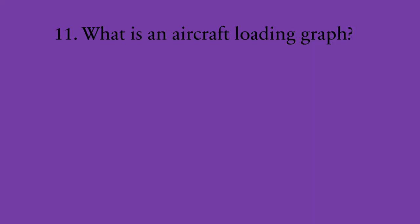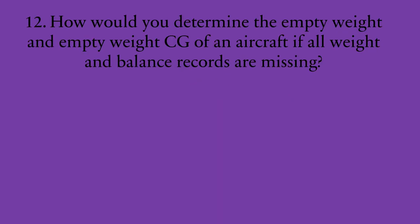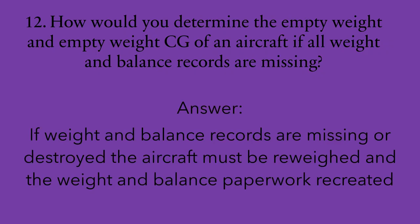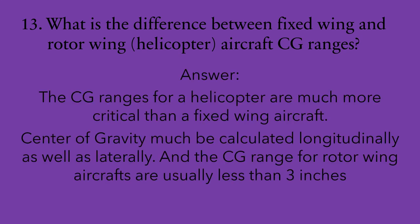Number eleven: what is an aircraft loading graph? A method of determining load distribution so that the aircraft remains within its operating CG range. Number twelve: how would you determine the empty weight and empty weight CG of an aircraft if all weight and balance records are missing? If weight and balance records are missing or destroyed, the aircraft must be re-weighed and the paperwork recreated. Number thirteen: what is the difference between fixed wing and rotary wing helicopter aircraft CG ranges? The CG range for helicopters is much more critical than for fixed-wing aircraft. The CG must be calculated longitudinally as well as laterally, and the CG range for rotary wing aircraft is usually less than three inches.